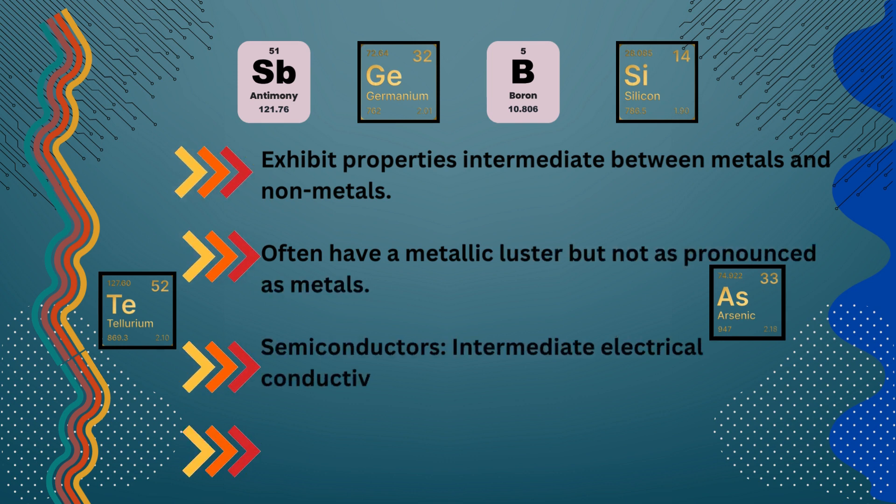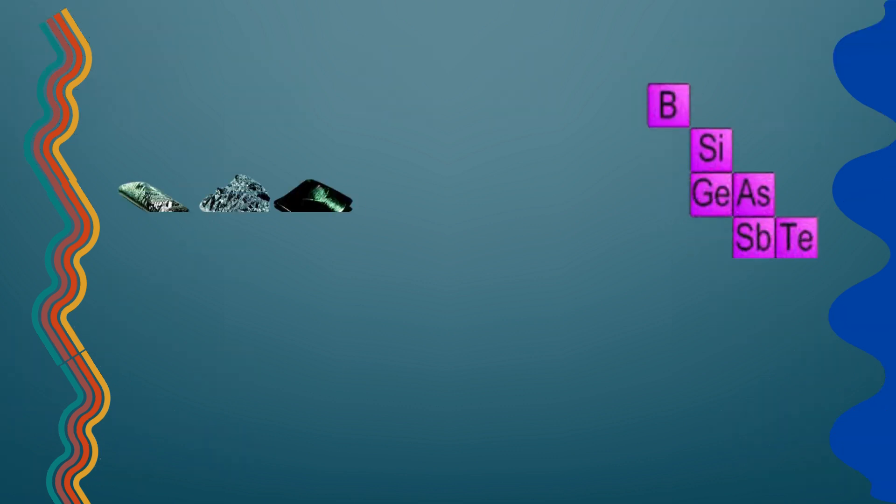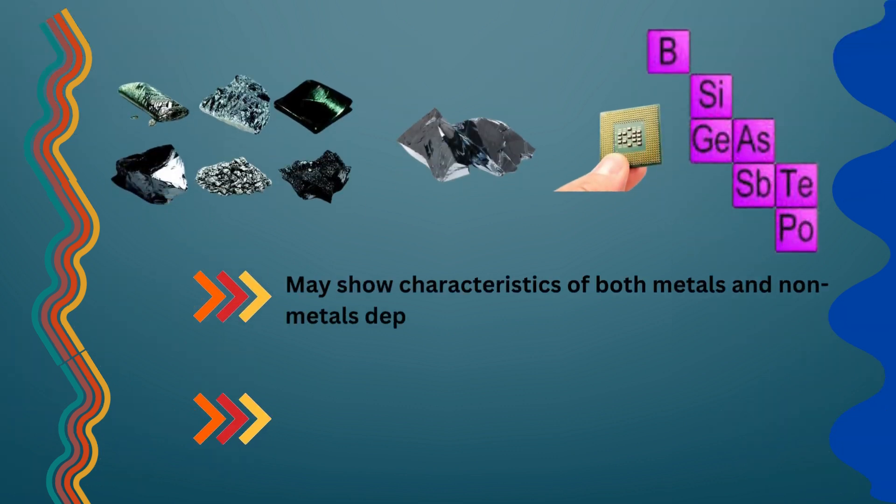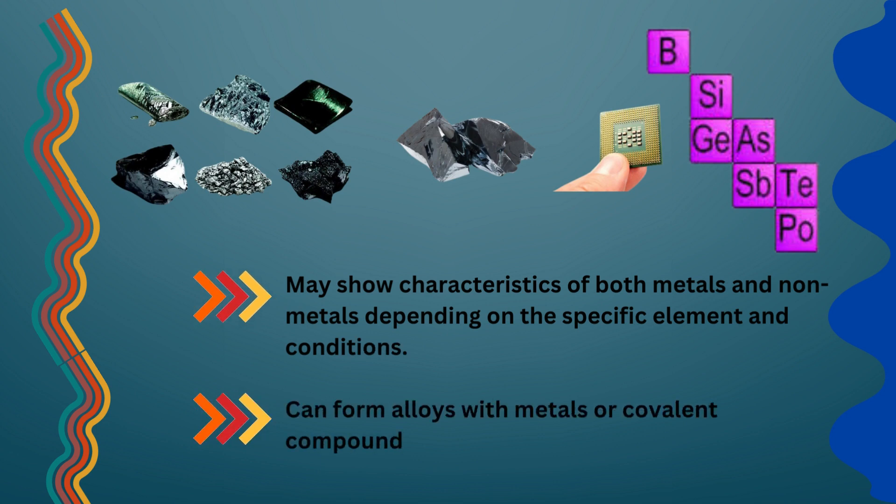Semiconductors, intermediate electrical conductivity. Can be solid, liquid, or gas at room temperature. May show characteristics of both metals and non-metals depending on the specific element and conditions. Can form alloys with metals or covalent compounds with non-metals.